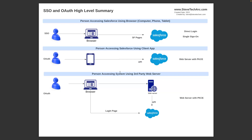In the third scenario, we have a human using a browser talking to a third-party web server, and then they want that third-party web server to access Salesforce on their behalf. Examples include the Workbench app, email plugins, or a variety of systems where the human goes to a browser, goes to a third-party server, but wants that server to reach in and access their Salesforce data. In this case we're still talking about OAuth, and the new flow is the web server with PKCE, which we'll go into in detail in a subsequent video.